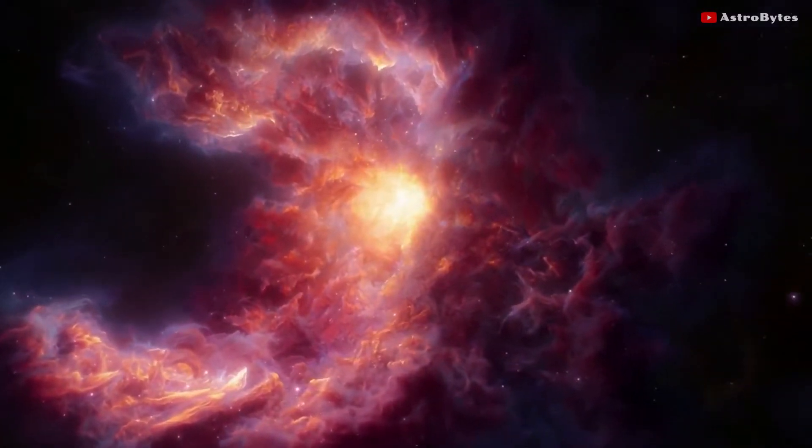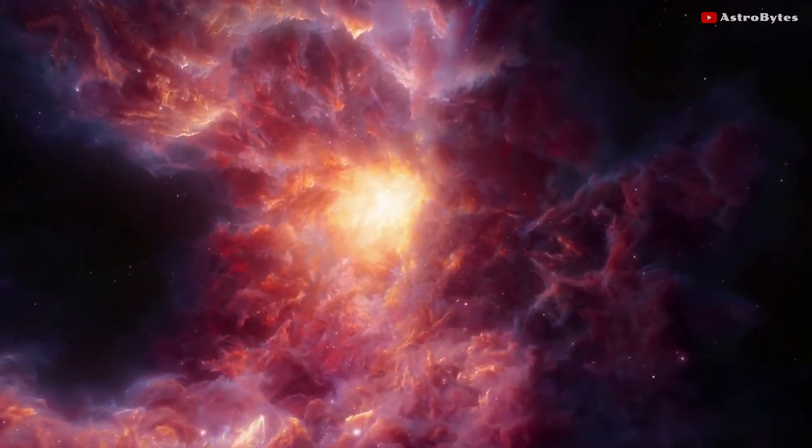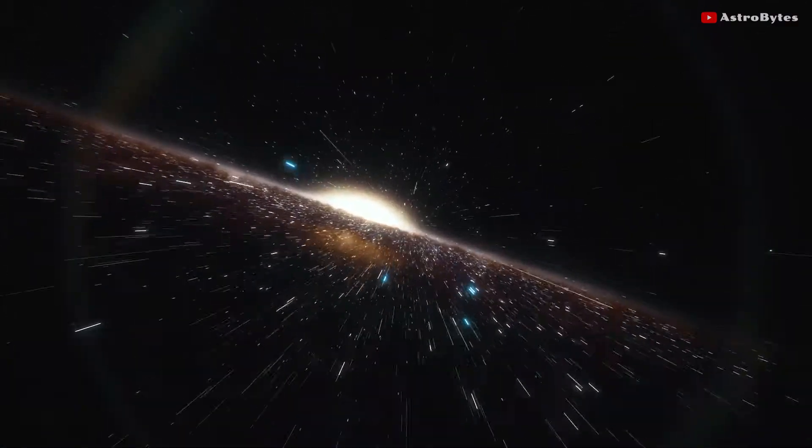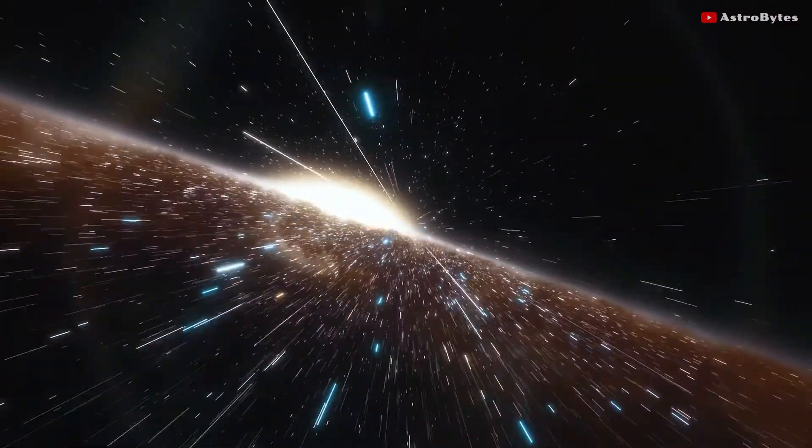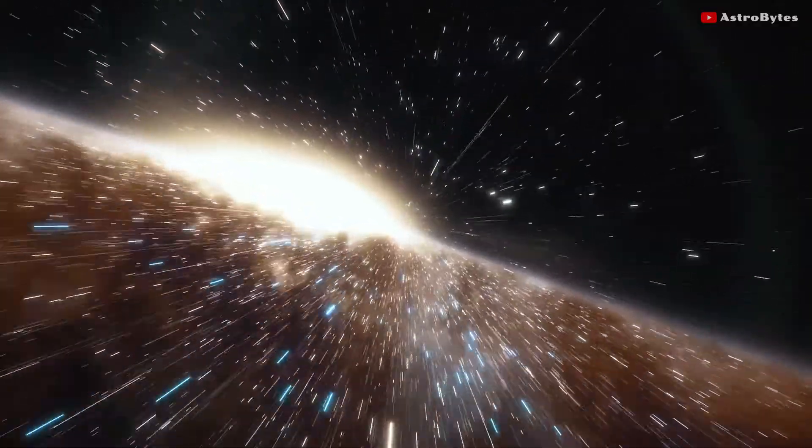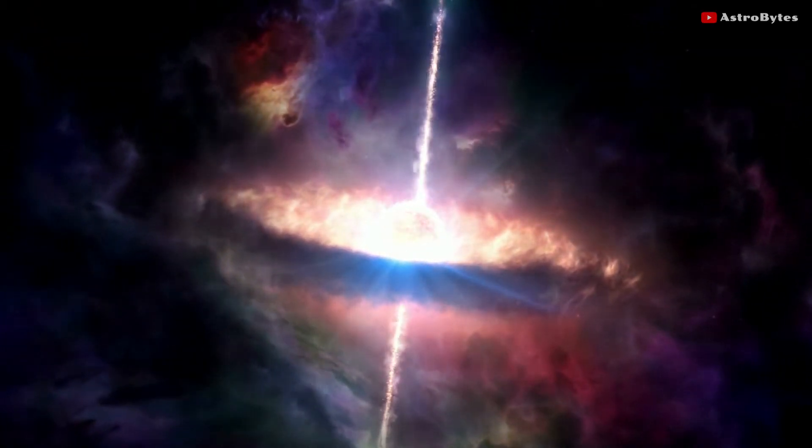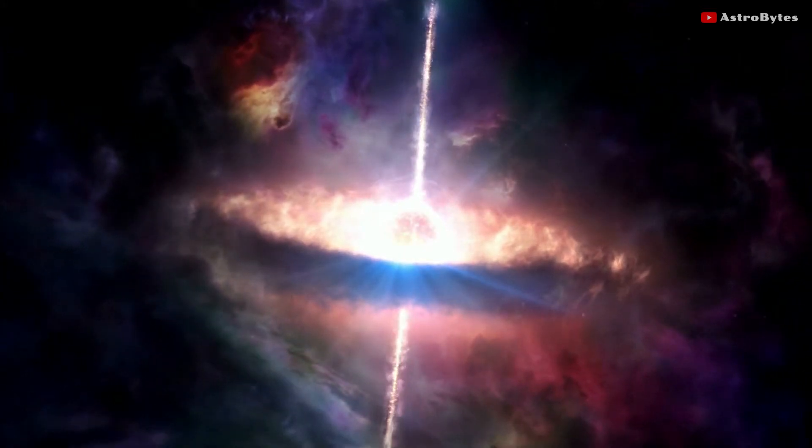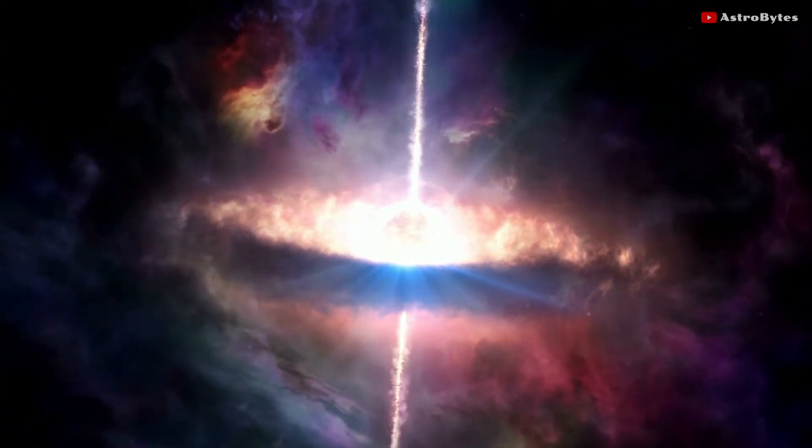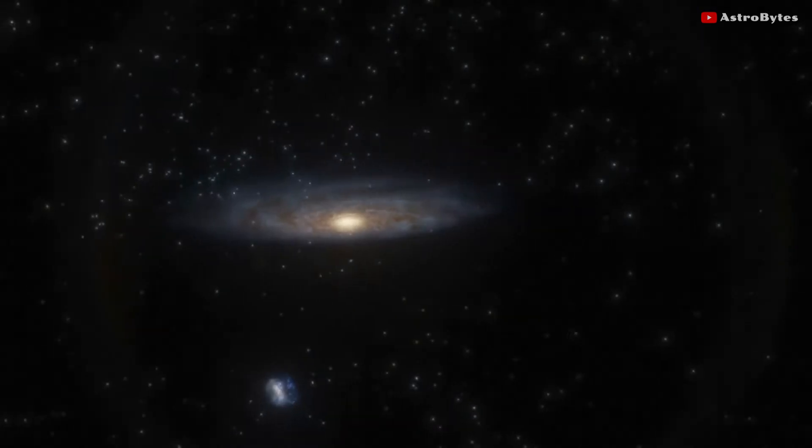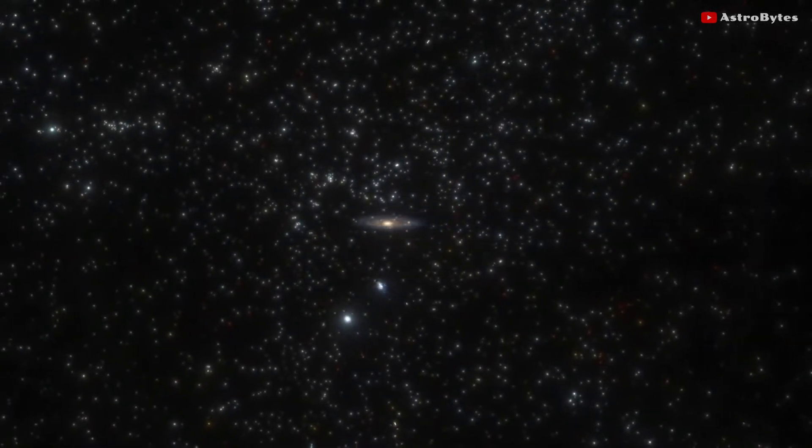It has a large central bulge of old stars surrounded by a disk of young stars and spiral arms. It also has a massive black hole at its center, about 140 million times the mass of our Sun. Andromeda also has many satellite galaxies orbiting around it, some of which are visible from Earth as faint smudges in the sky.